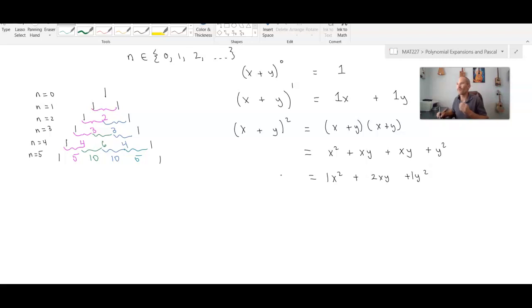Just to be certain that we think that we're on the right track let's do one more row before we try to create a convincing argument for how this works. So x plus y cubed, well that's going to be x plus y times x plus y times x plus y. Now so that we don't have to repeat this distributive process a total of two times, I'm going to write this as x plus y squared times x plus y.